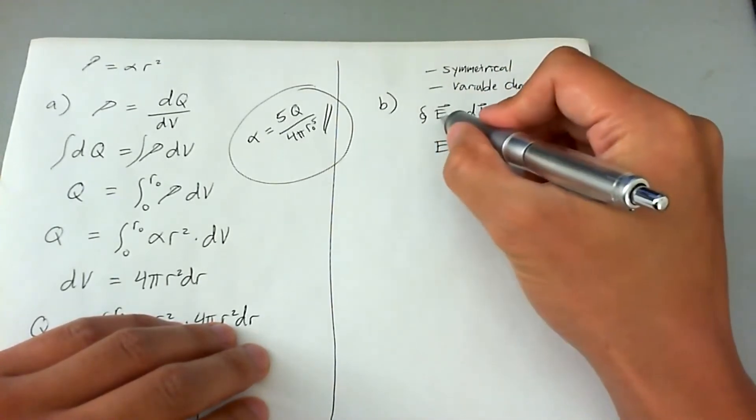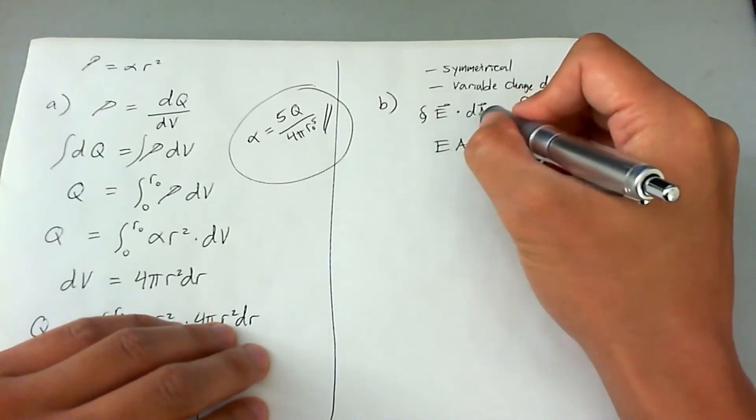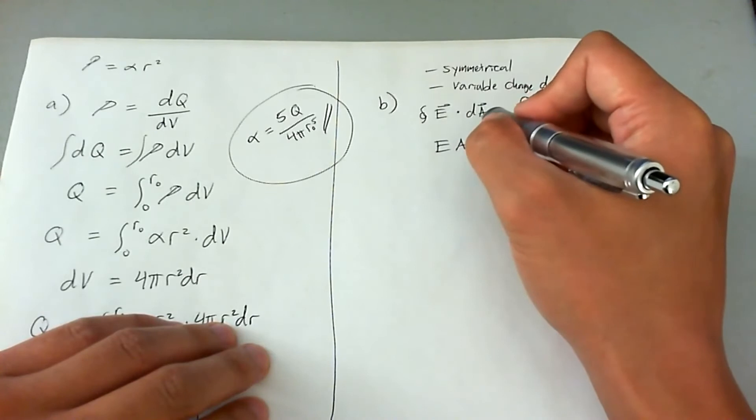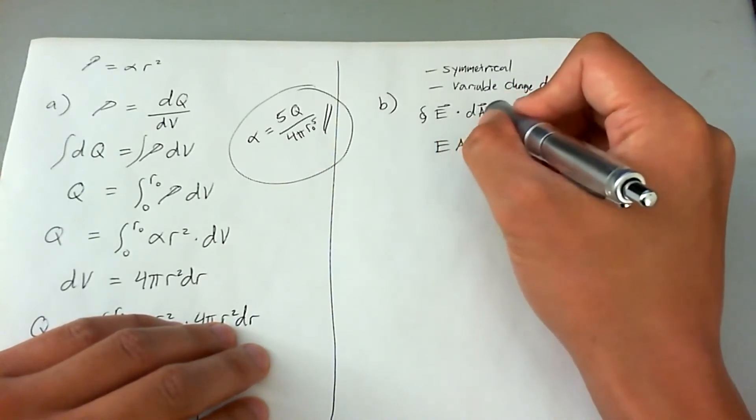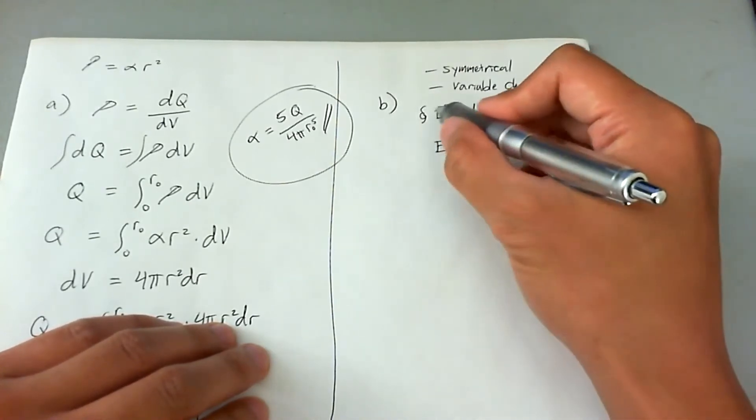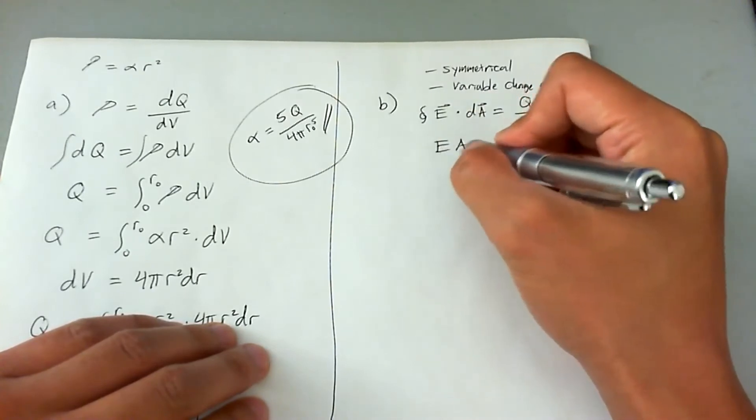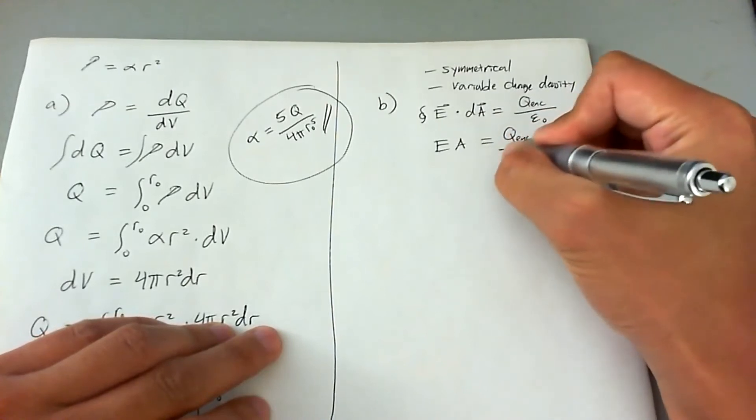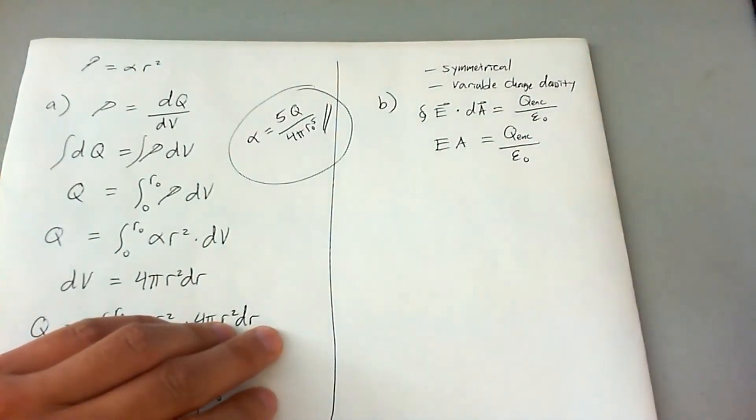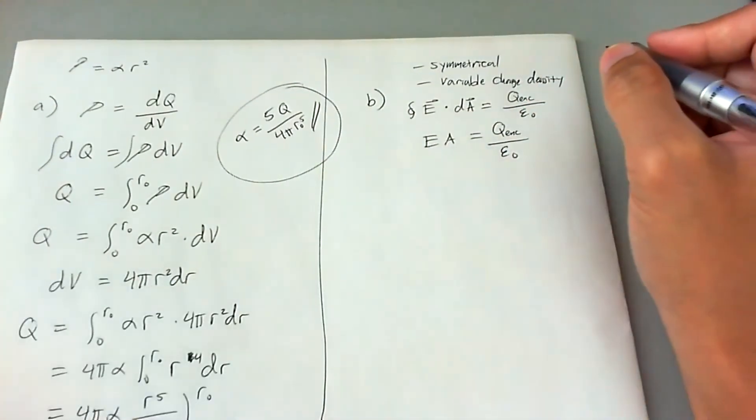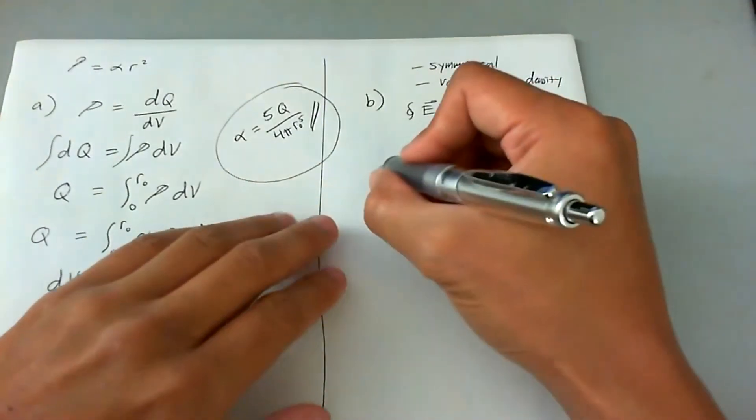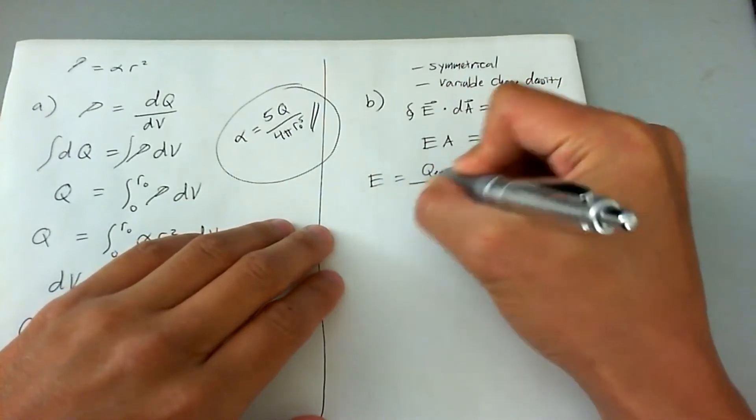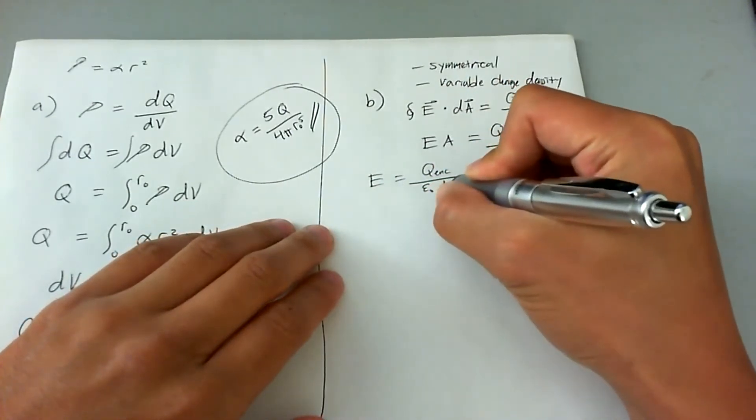Now, see, the dot product basically just means that E has to be parallel with the area vector, and it always is. And D-A just means that perhaps E varies with D-A, which actually it doesn't. So the integral of all of this just ends up being E times A. That's going to equal to Q enclosed divided by epsilon naught. All right, so the point here is to try to find E. Let's go ahead and say E then is equal to Q enclosed divided by epsilon naught A.